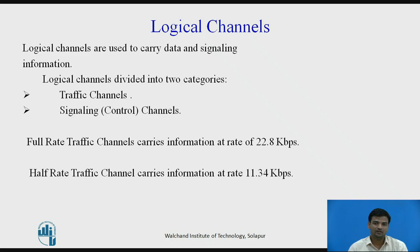Traffic channels can be of two types. The first type is the full rate traffic channel and the second is the half rate traffic channel. The full rate traffic channel carries information at a rate of 22.8 kbps, and the half rate traffic channel carries information at a rate of 11.34 kbps.